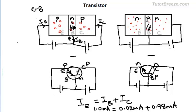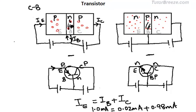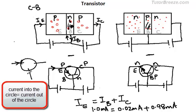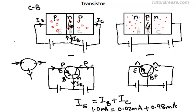Let's draw the arrows showing the currents. In a PNP transistor, the emitter current arrow points from the emitter to the base. The current flows into the circle, so both the base current and collector current flow out of the circle. In an NPN transistor, the emitter current flows out from the base-to-emitter direction, so an equal amount of current flows into the circle — the base current and collector current both flow into the circle.